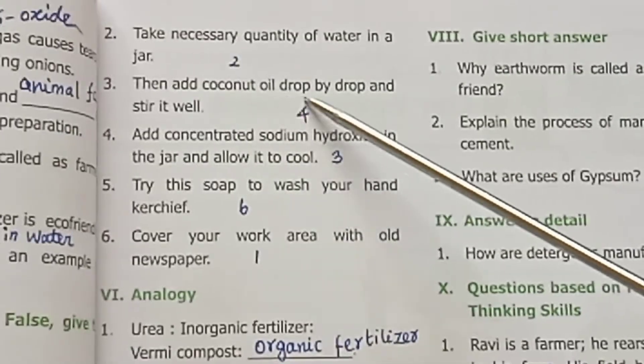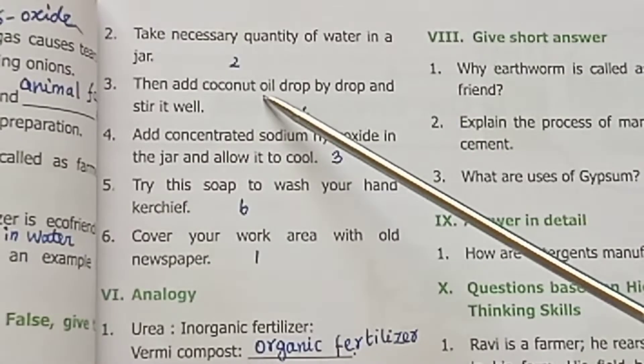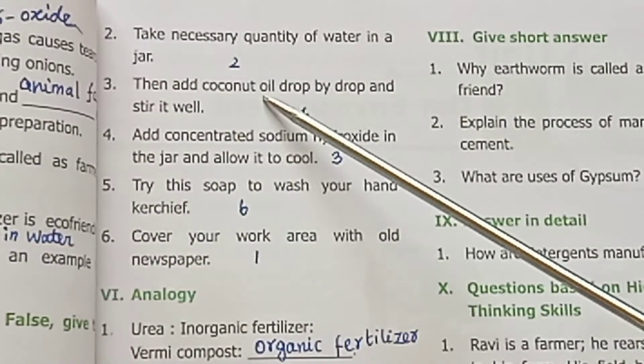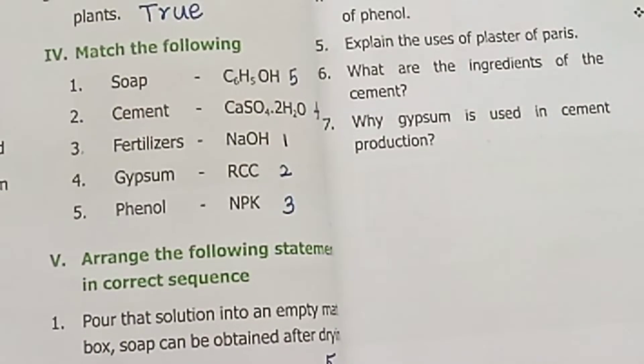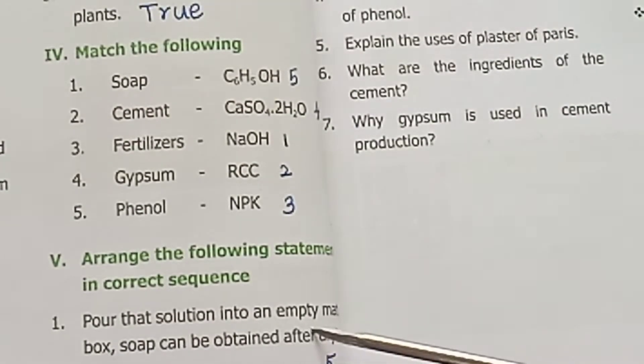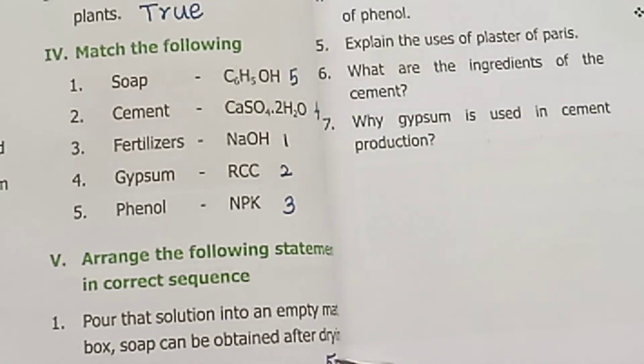4. Add coconut oil drop by drop and stir well. 5. Pour that solution into an empty matchbox — soap can be obtained after drying.